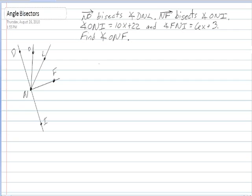So we need angle ONI, so here is O and I, and then NF is bisecting that angle. We know that the entire angle ONI is 10x plus 22, and that FNI is 6x plus 3.